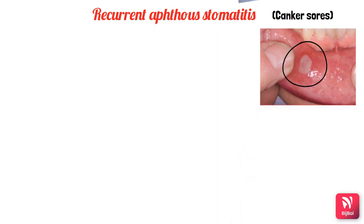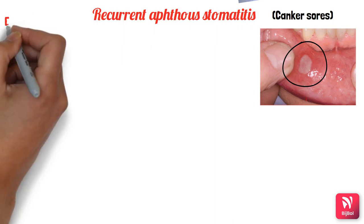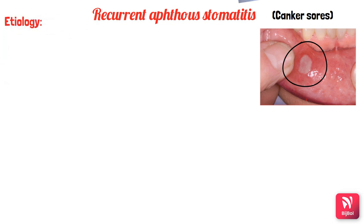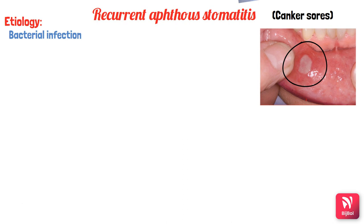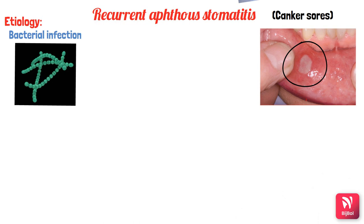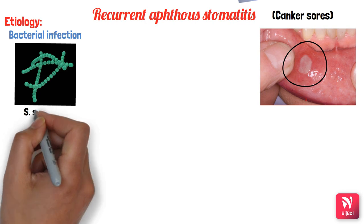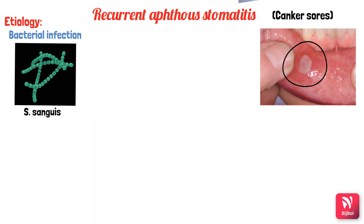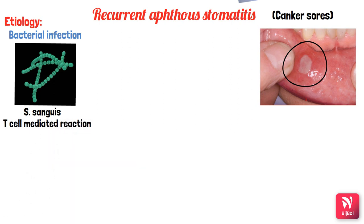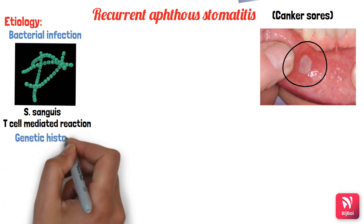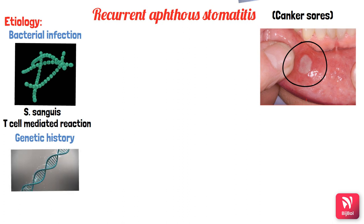The main etiological factors of recurrent aphthous stomatitis are numerous. The first is bacterial infection — one important bacterium associated with aphthous ulcers is alpha-hemolytic Streptococcus, that is Streptococcus sanguis. It occurs as an immunologic hypersensitivity reaction, specifically a T-cell mediated response. There can be cross-reaction between Streptococcus and oral mucosa, causing mucosal damage instead of killing the bacterium.